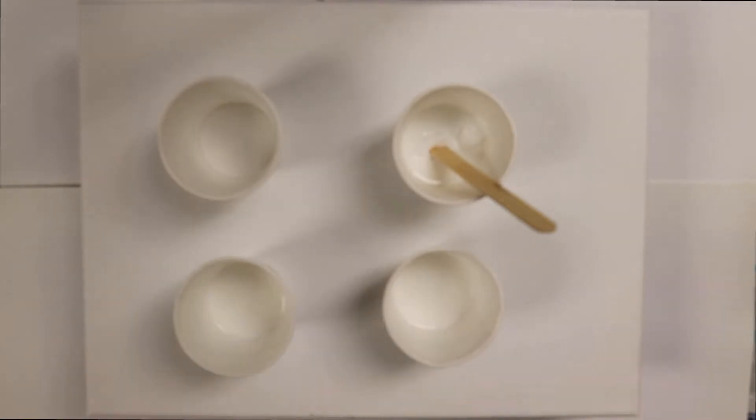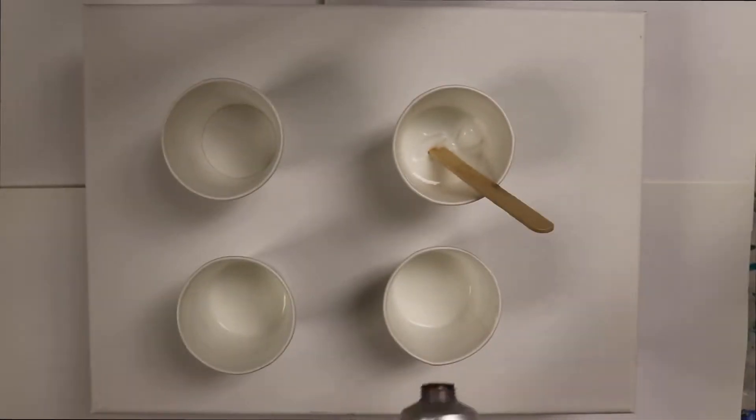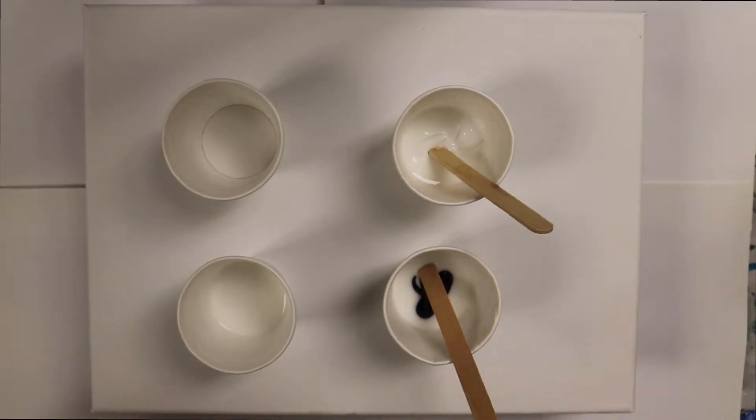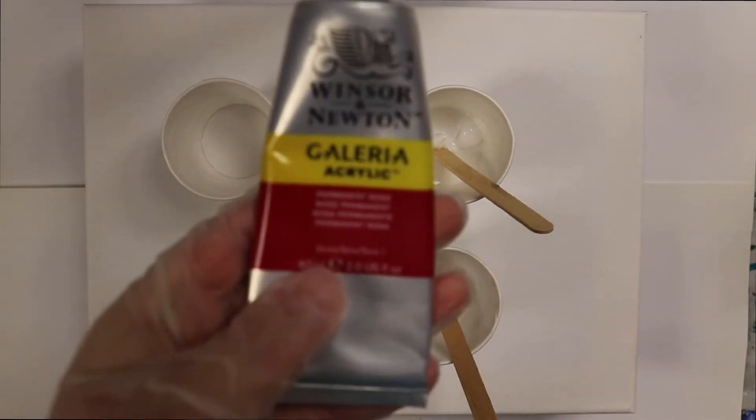Just take a little bit of your paint and put it in with your Floetrol and then mix it really good. You want to make sure you get all the lumps out of it and get a nice smooth consistency.